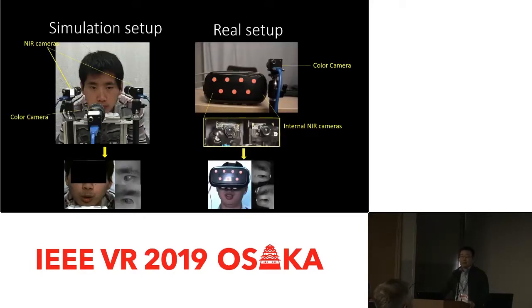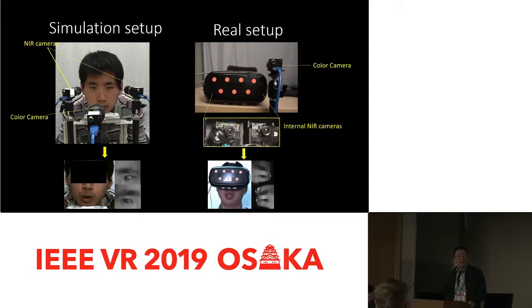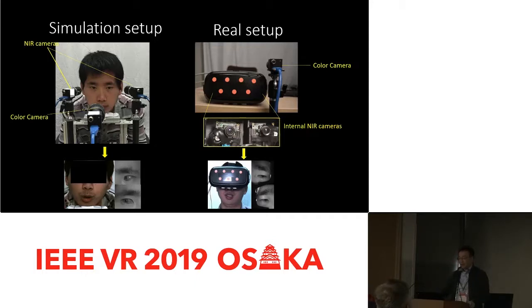We have two types of setups. One is a simulation setup, where we basically put someone on a chair rest and have a face camera and a near-infrared camera to look at the eyes — we use this to generate ground truth. In our real setup, we modified a head-mounted display and put two tiny cameras as well as a light source inside the HMD, just like previous approaches. We also have a fixed color camera looking at the entire person.